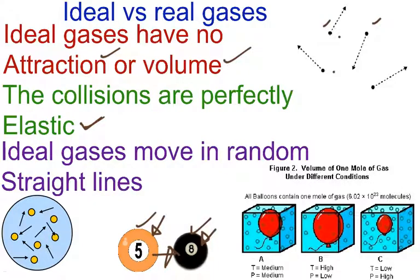Real gases have those, though. Ideal gases move in random straight lines, so they move randomly in different directions, but it should always be in a straight line. So once again, ideal gases, perfect gases: no attraction, negligible volume, and the collisions in terms of energy are perfectly elastic, perfectly energy transfer, and random straight lines.